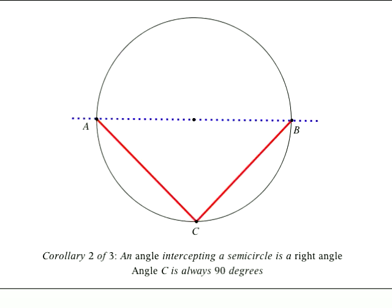Corollary number two. An angle intercepting a semicircle is a right angle. Now a semicircle, this entire arc around here is a semicircle. So the points B and A here, if we create a segment, that is the diameter.